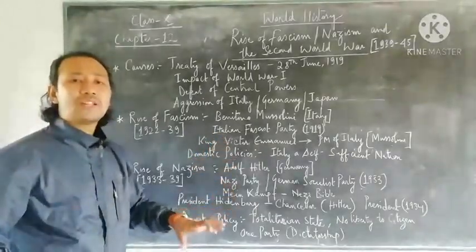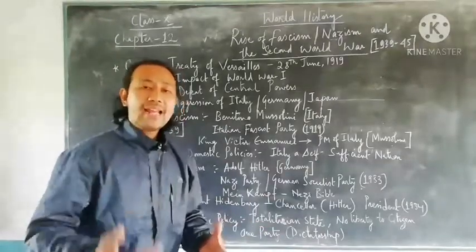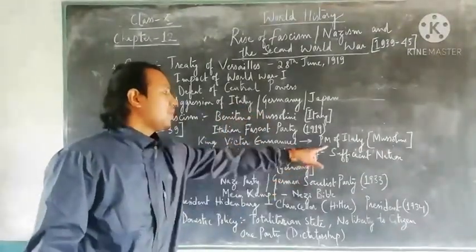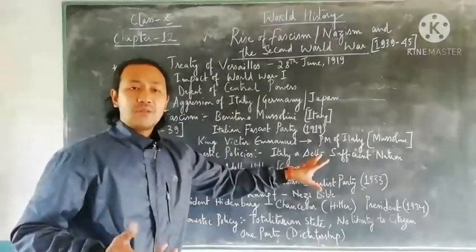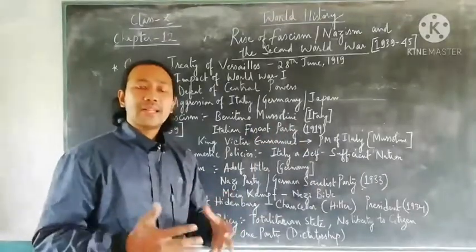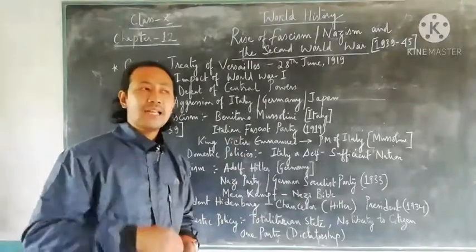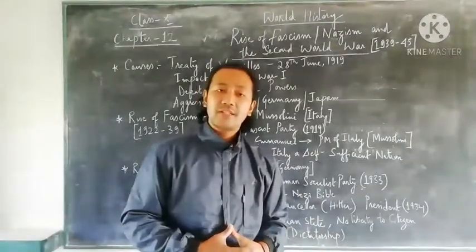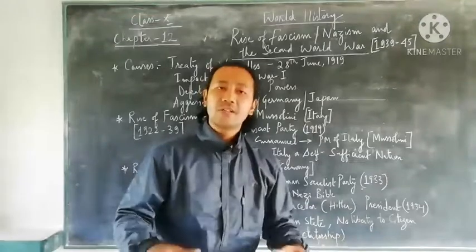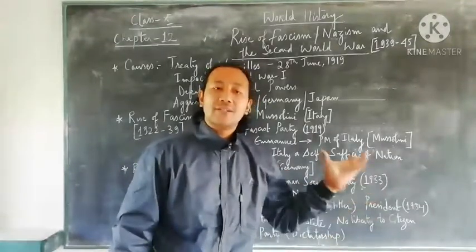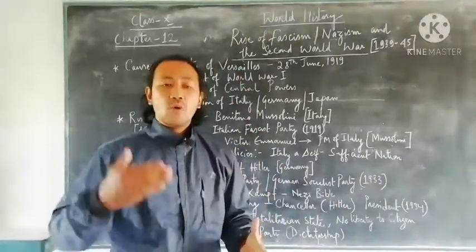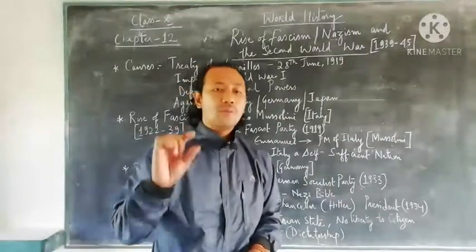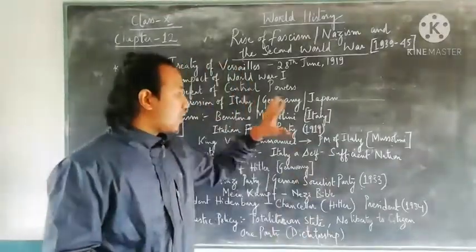As Mussolini's popularity grew to a very high level, King Victor Emmanuel of Italy made Mussolini the Prime Minister. With lots of responsibility on his shoulders, he worked on domestic policies to make Italy a self-sufficient nation, contributing all his efforts toward that goal. Benito Mussolini is regarded as one of the great dictator leaders who later shook hands with Germany and Japan in the Rome-Tokyo-Berlin Axis in 1937.